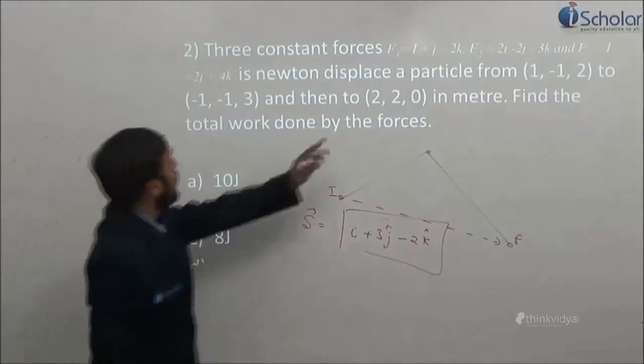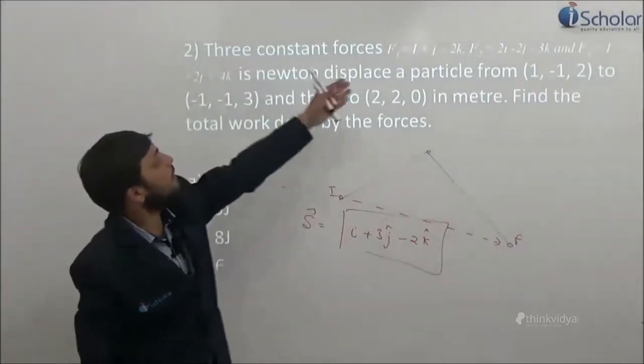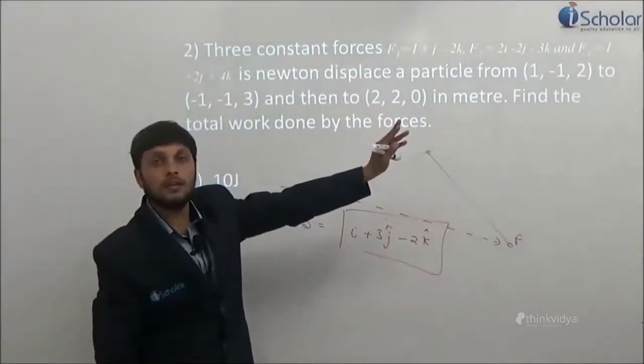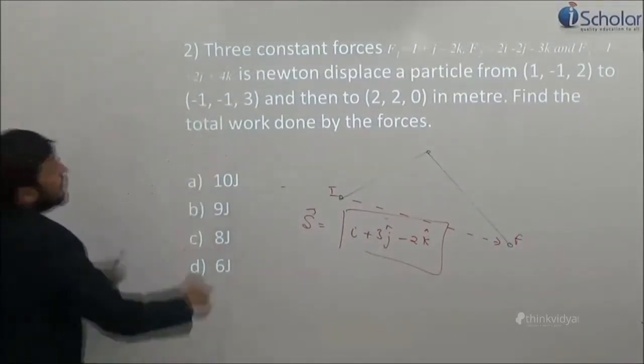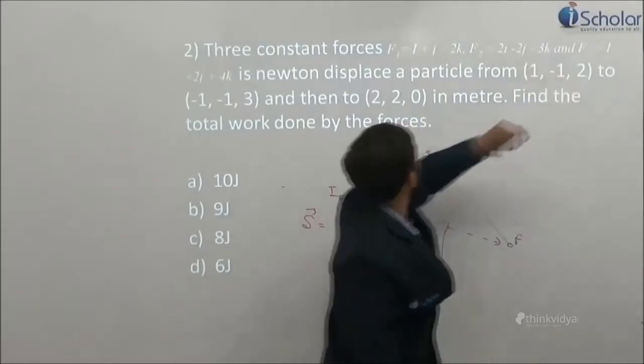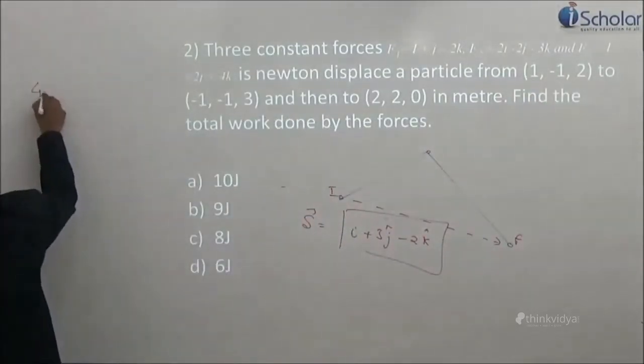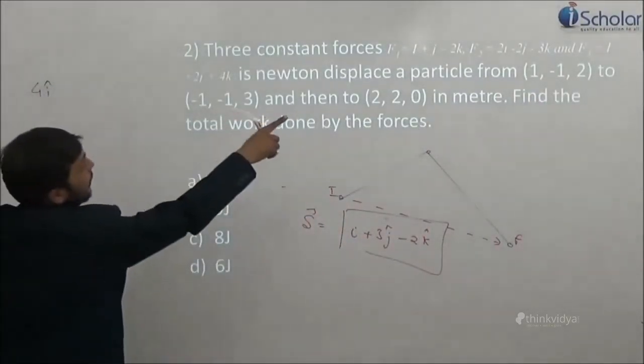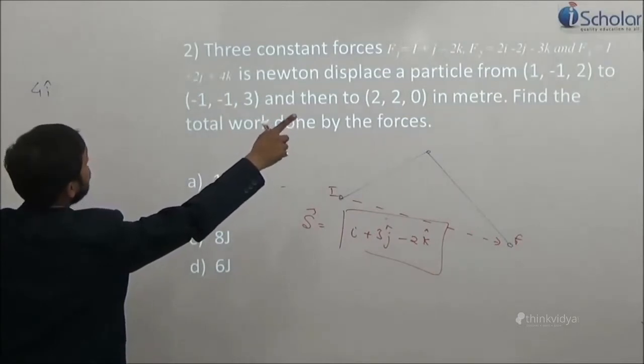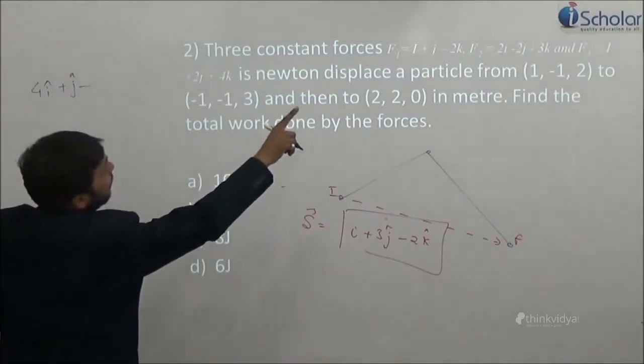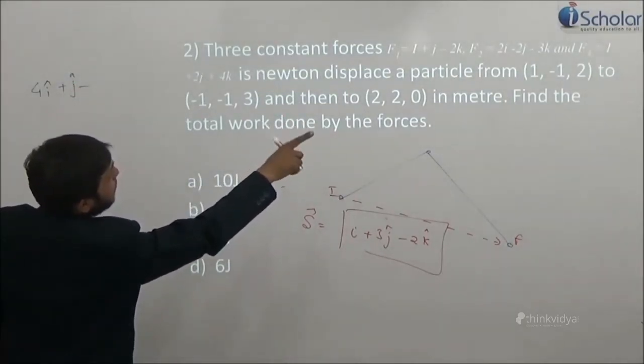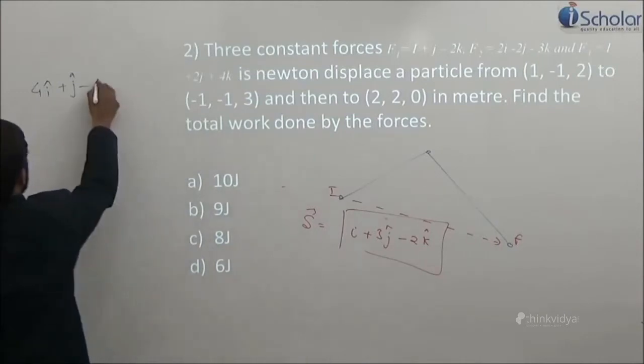So what is the net work done? Net work done will be the net forces. What is the net forces? i, 2i and one more i, so it is 4i.